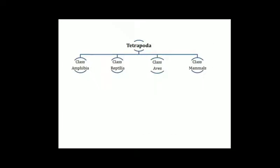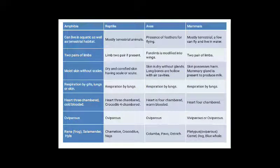Class Tetrapoda have four classes: Amphibia, Reptilia, Aves and Mammals. A detailed account on Amphibia, Reptilia, Aves and Mammals will be discussed.